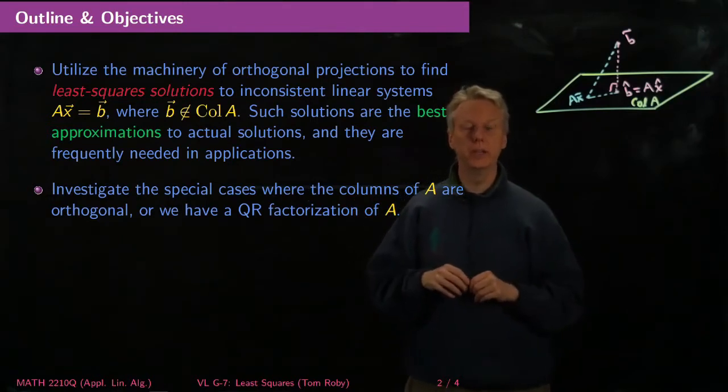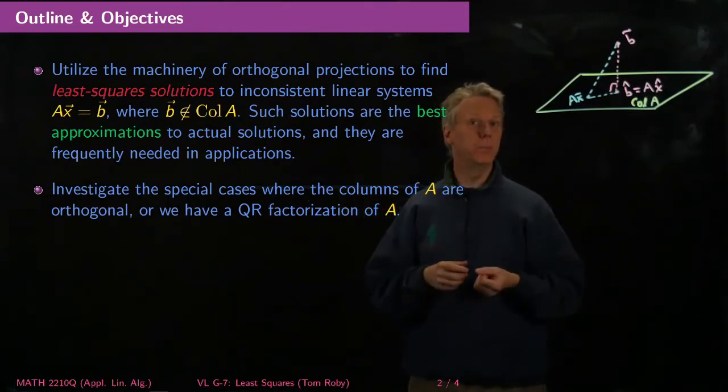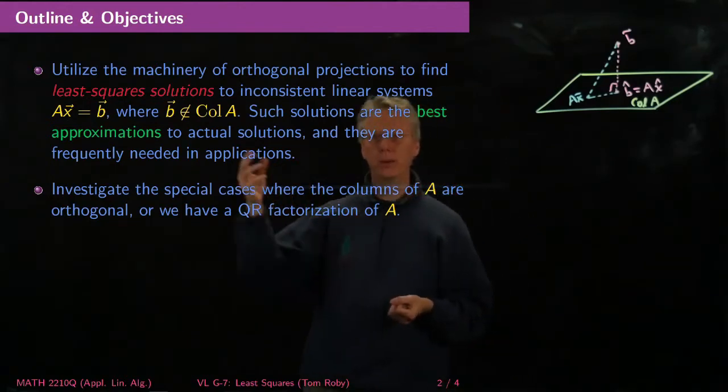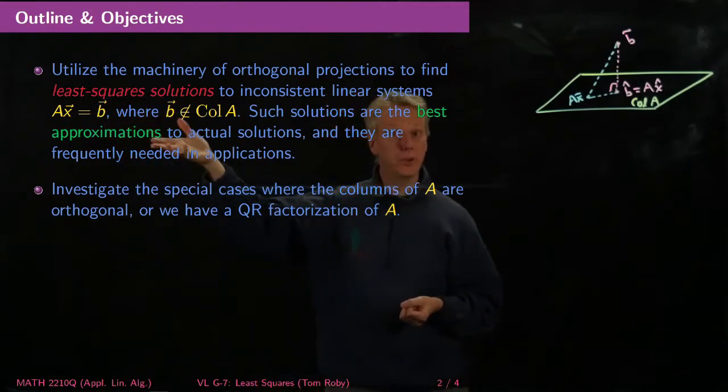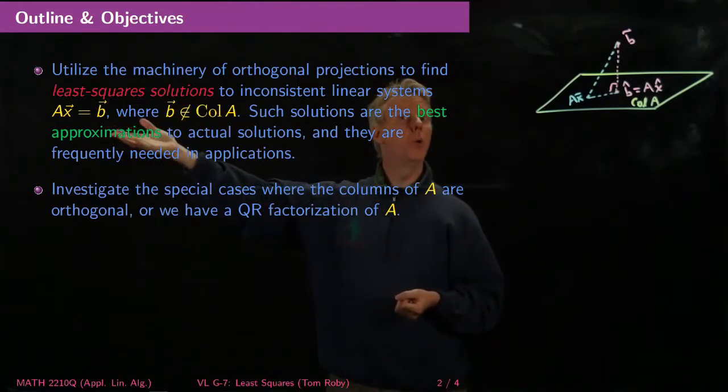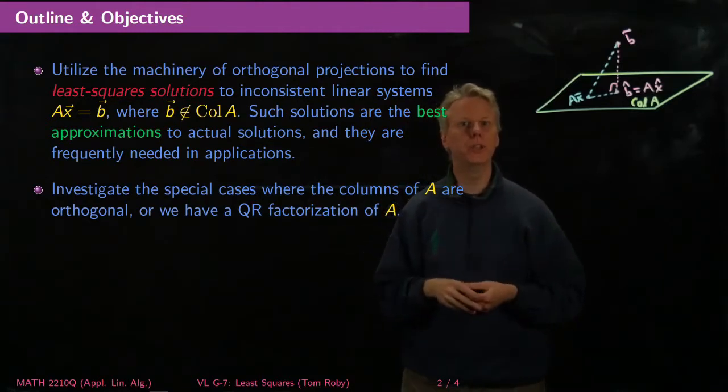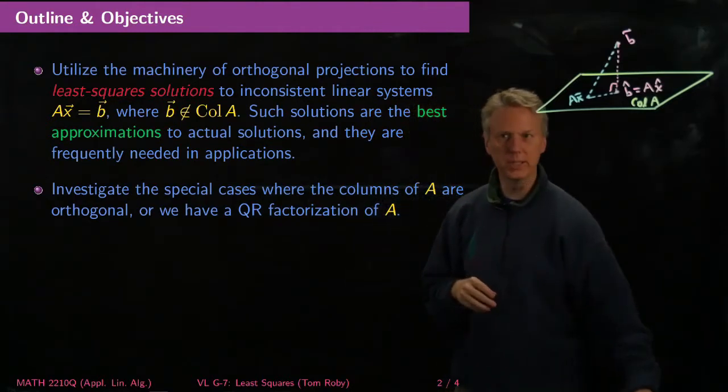Or it's also possible that there is no solution, but you still need to figure out what input you want to put into the system. If you think about A as representing a system, X as your inputs and B as your outputs, then you're shooting for a certain output. There's no X that gives you that exact output. What's the best approximation you can get? So that's what this is all about.